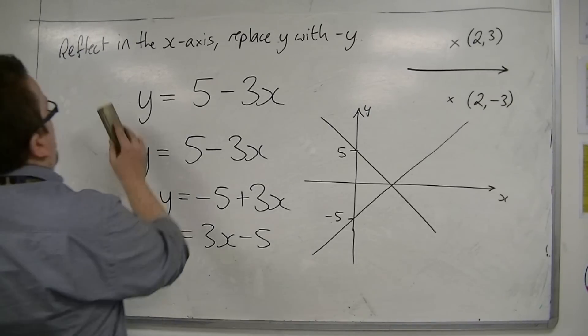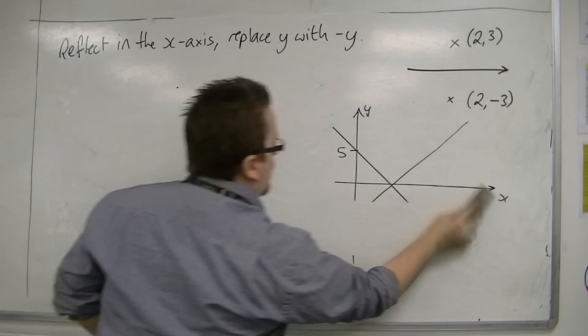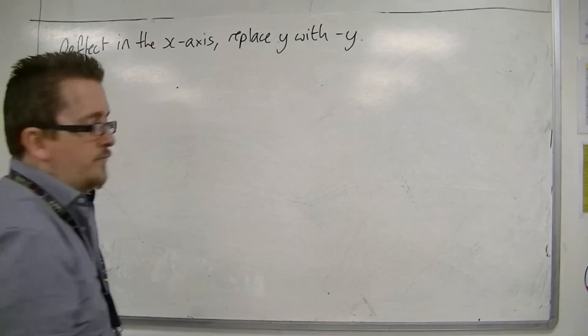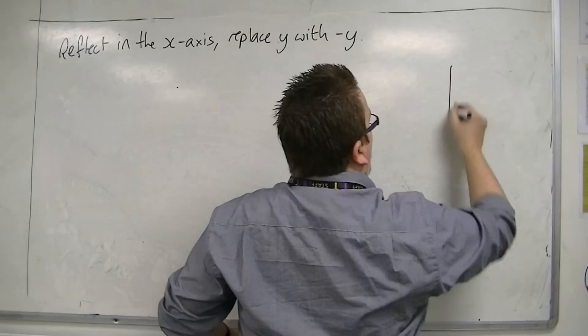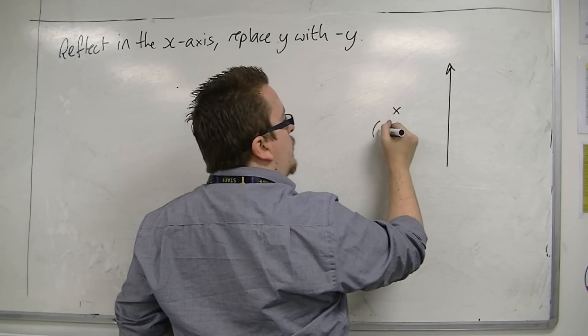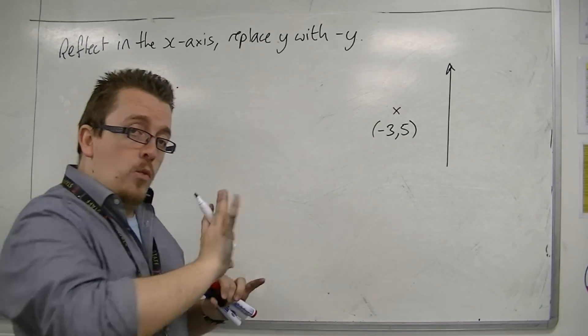Now, how about if we're reflecting in the y-axis? We'll do a similar little example. If we've got a y-axis, and then I have a coordinate, let's say I've got the coordinate (-3, 5), and then I reflect it in the y-axis,